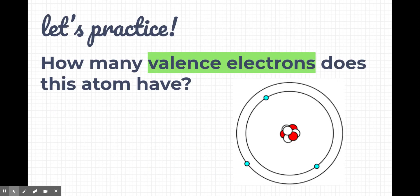So let's practice just identifying a valence electron. Look at this image right here. How many valence electrons does this atom have? If you said one, you're correct. This atom has one valence electron because in the outermost ring, the outermost energy level, there's only one electron there.